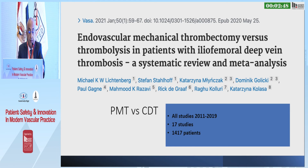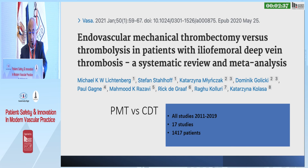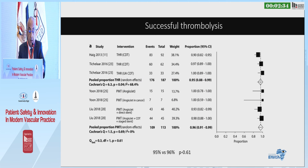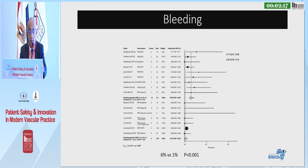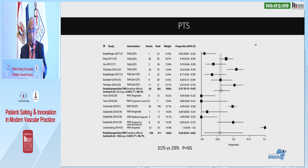What are the results of pharmacomechanical thrombolysis compared to straightforward catheter-directed thrombolysis? A large meta-analysis comprising 17 studies and 1,400 patients showed that in terms of successful thrombolysis, both the pharmacomechanical and catheter-directed thrombolysis groups were equal. There was an advantage toward primary patency in the pharmacomechanical group, and more bleeding in the catheter-directed thrombolysis group. There was no difference in terms of post-thrombotic syndrome.